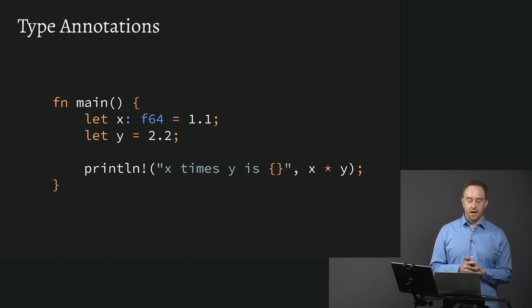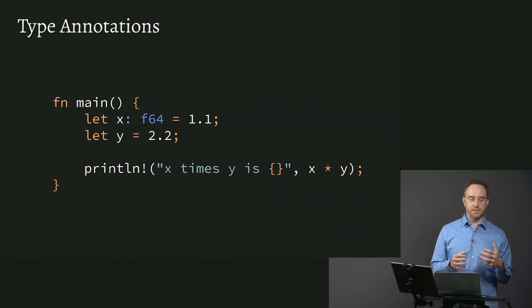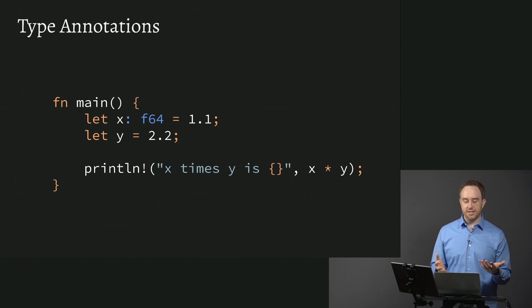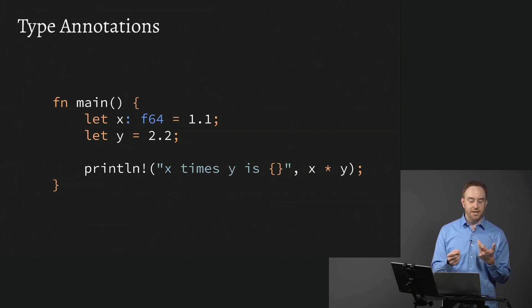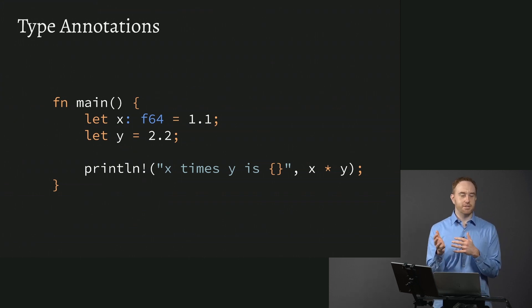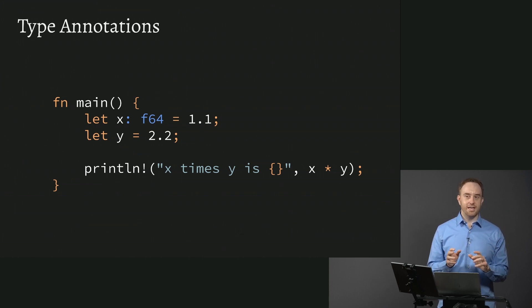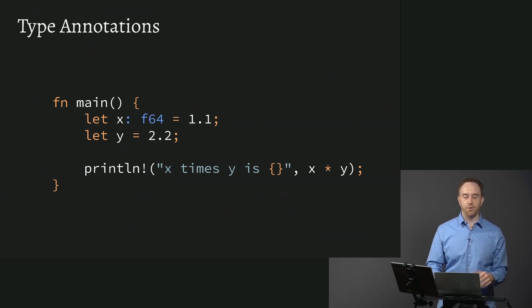It's worth noting that type inference doesn't always work — it's not always able to provide that. So in some cases, especially with more complicated types, Rust won't be able to infer the type and the compiler will say it needs you to write out the type annotation. But importantly, it'll never get it wrong — it'll never mis-infer something. The worst that'll happen is it gets it right, or it says 'I couldn't figure this out, I need you to tell me.' The compiler is at least reliable, even if it can't always offer inference.